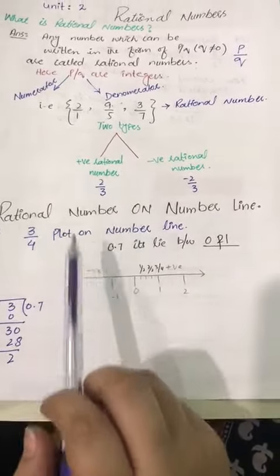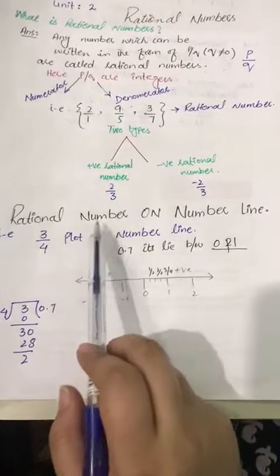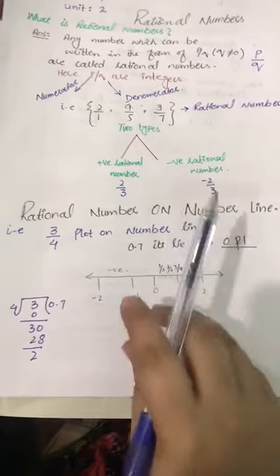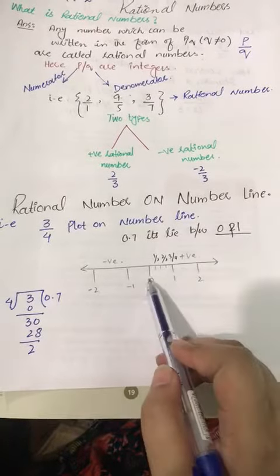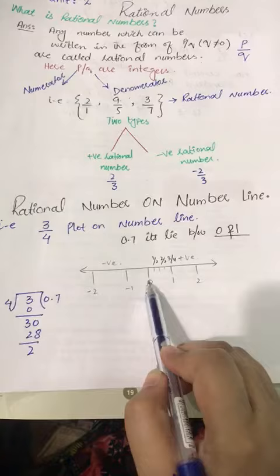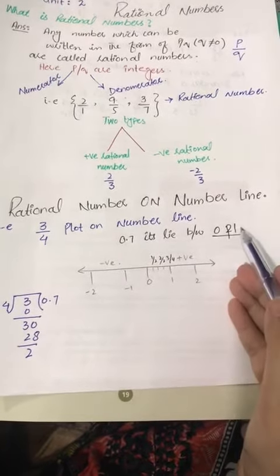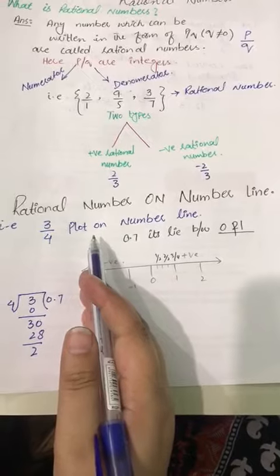Rational number on number line. For example, if we have a number 3/4, plot on a number line. So what should we do? We know about a number line - this is a number line. Center is 0. On right hand side is positive integers and left hand side is negative integers.